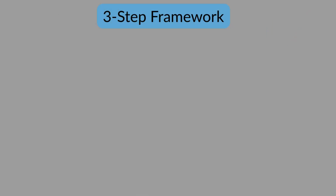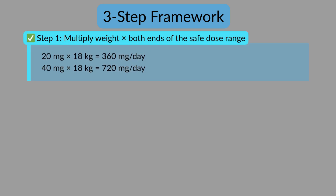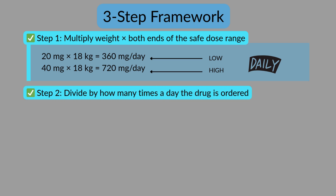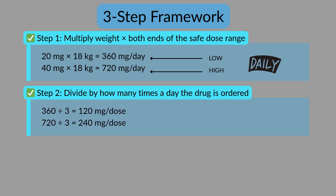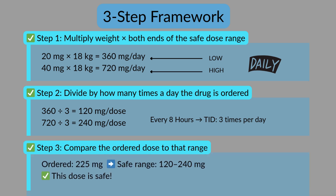Here are three steps to help you calculate the safe dose range. Step one: multiply the weight by both ends of the safe dose range — this gives you the total daily low and high limits. Step two: divide by how many times a day the drug is ordered. If the med is given every eight hours, that's three times per day. Step three: compare the ordered dose to that range. Does the dose fall between those numbers? If yes, it's safe. If not, you've got a clinical decision to make.